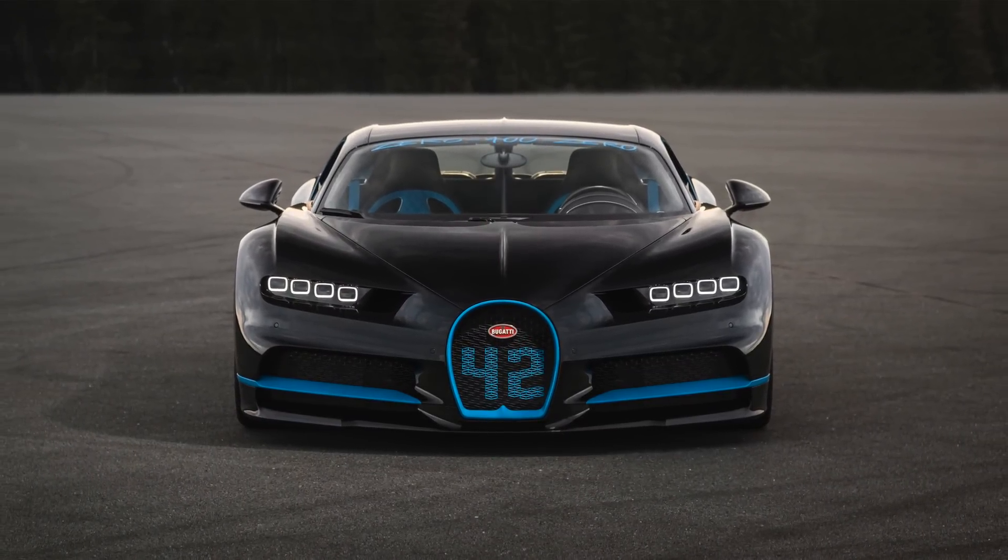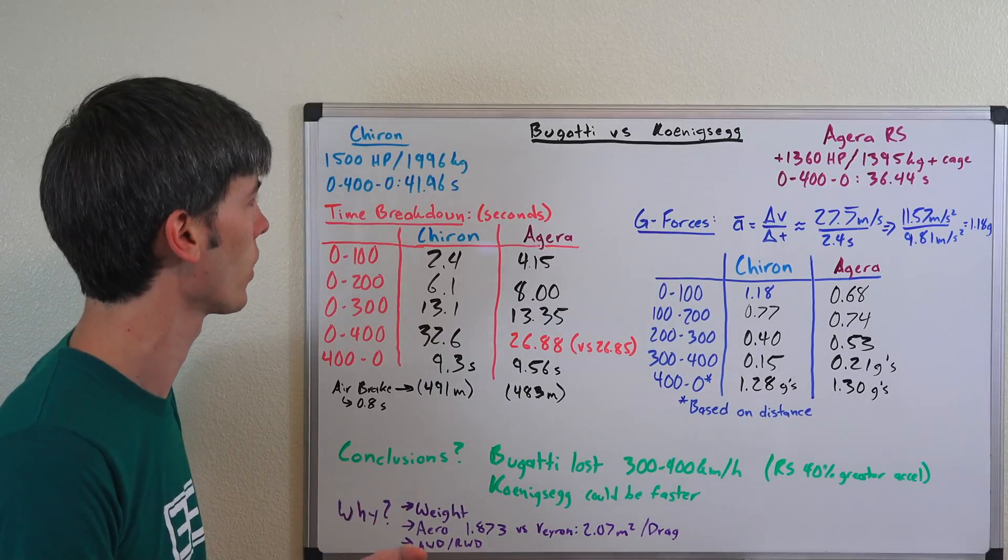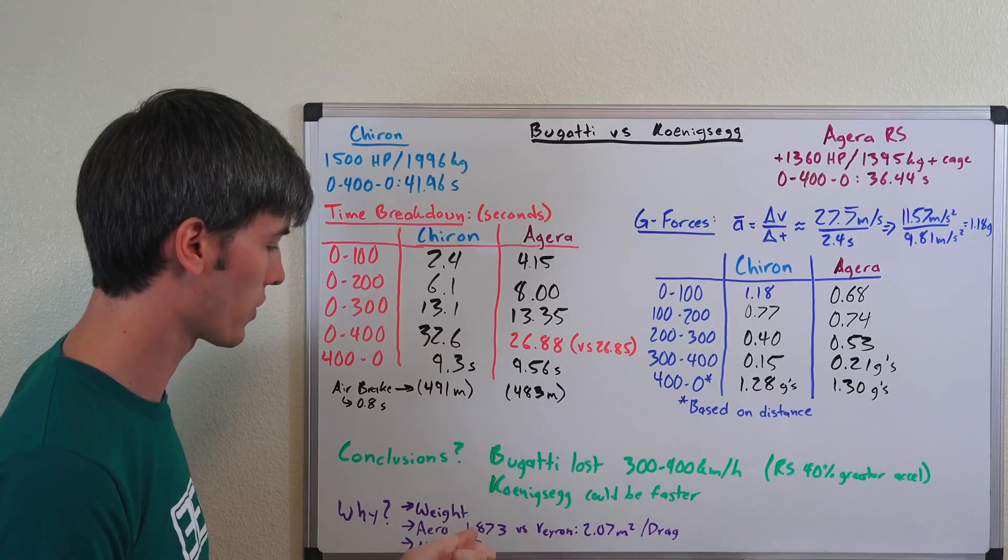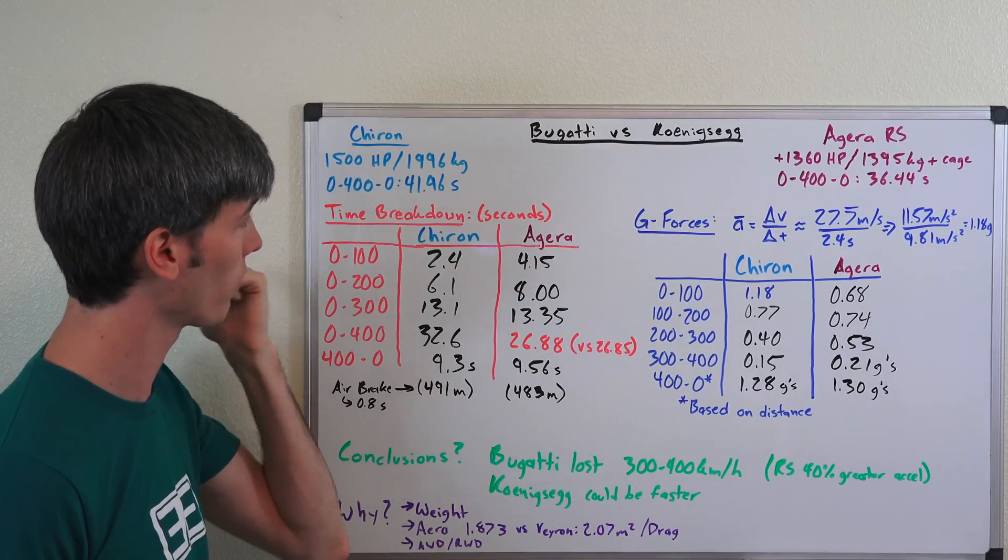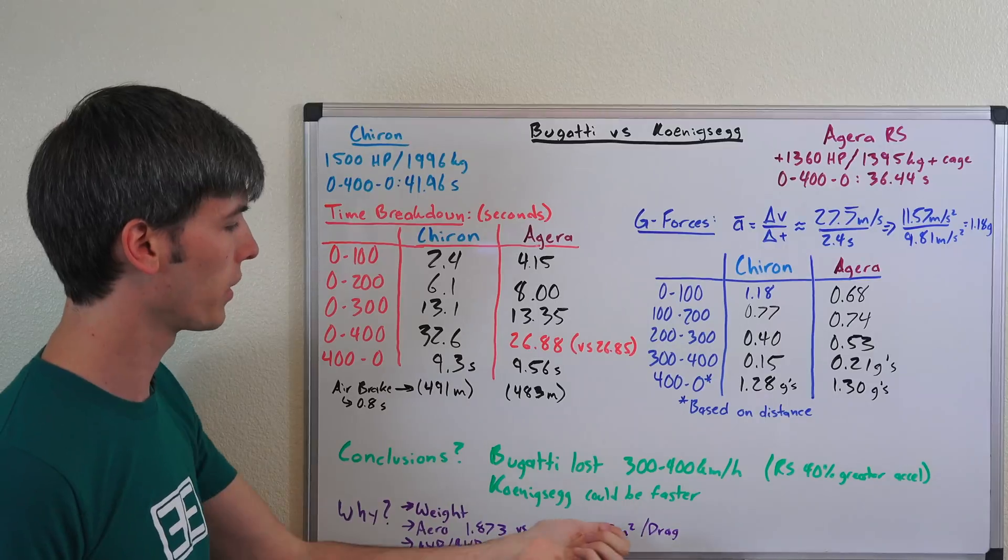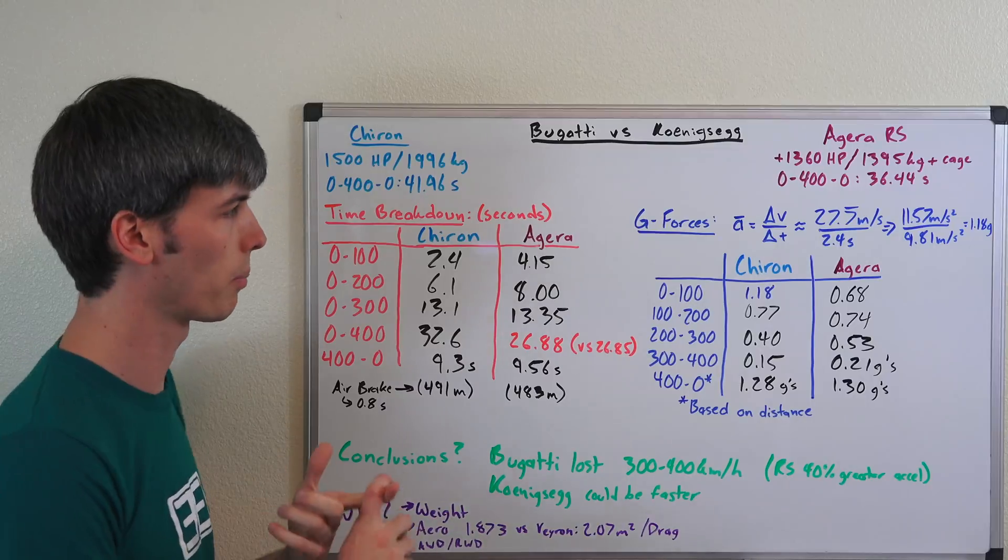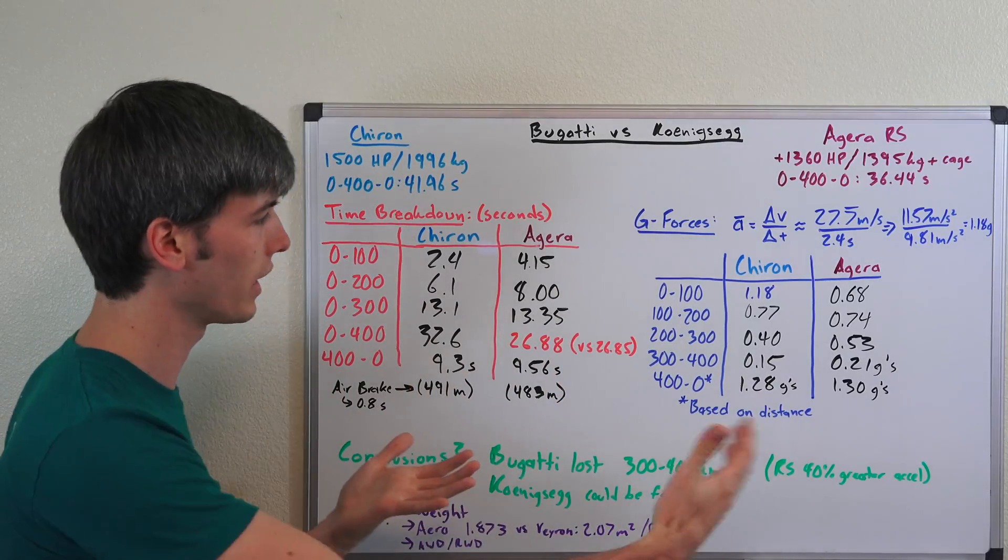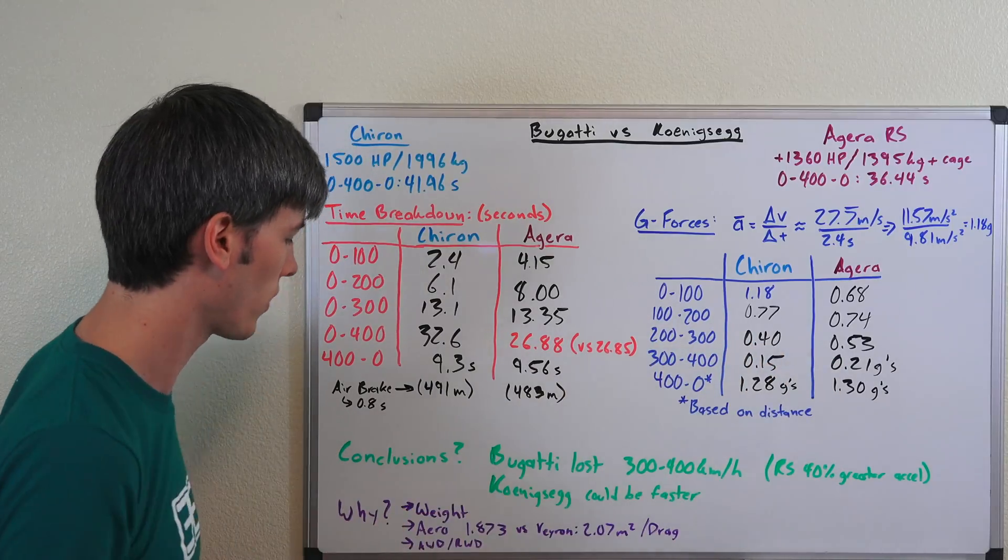So why was the Koenigsegg so much faster from 300 to 400 kilometers per hour? Well, first of all it does have a major weight advantage, so it's 600 kilograms less than the Chiron. Also, it probably has a pretty significant aerodynamic advantage. Its frontal area is 1.873 meters squared versus they don't have information for the Chiron, but if the Chiron is anything like the Veyron 2.07 meters squared, it could be somewhere around that. Point is less surface area means it's able to punch through that air better. Of course the power required to punch through air exponentially increases as you get into higher speeds, and so that advantage will become very clear once you get to these higher speeds.